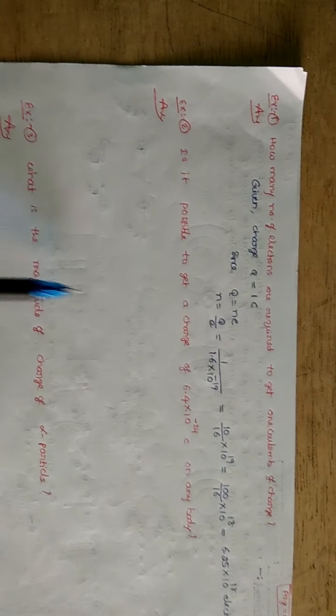You may get questions like 1 millicoulomb. Again, you can solve the question like this. I am going to show you two more examples. Is it possible to get a charge of 6.4 into 10 power minus 24 Coulomb on any body? Very simple, just use the basic formula, q equals Ne and find n value. If n is integer, then only this amount of charge is possible on any body. If n is decimal or fraction, this amount of charge is not possible.